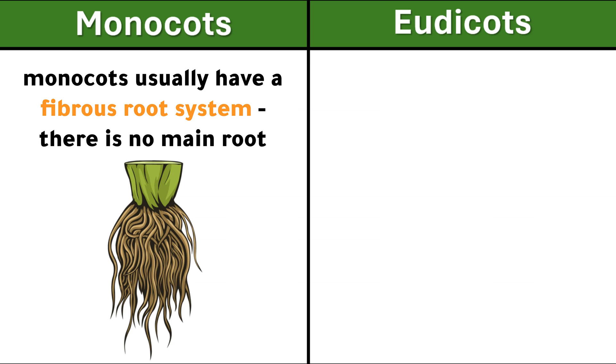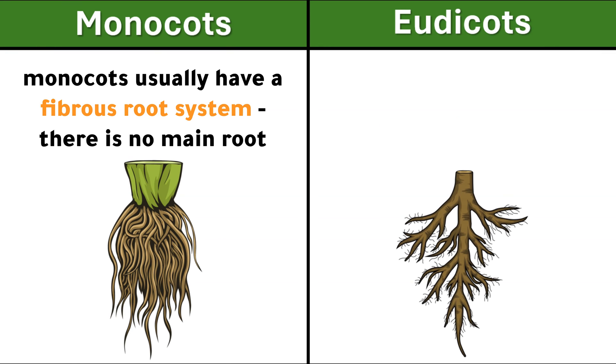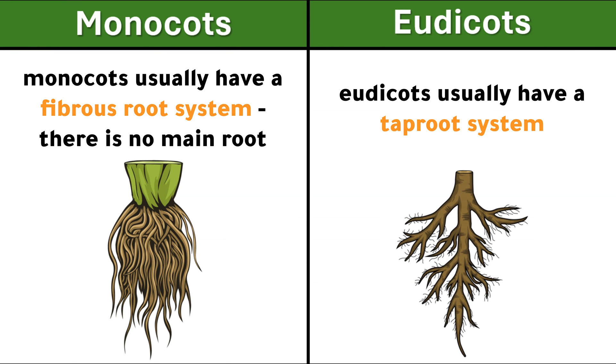Monocots usually have a fibrous root system with no main root. Eudicots usually have a taproot system.